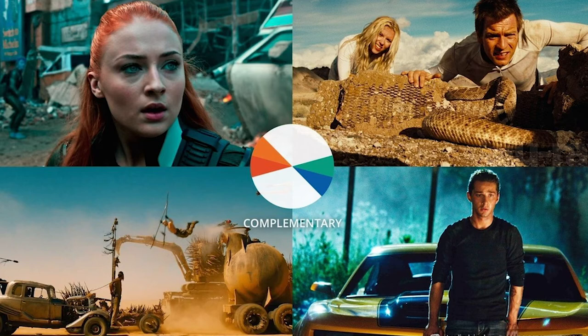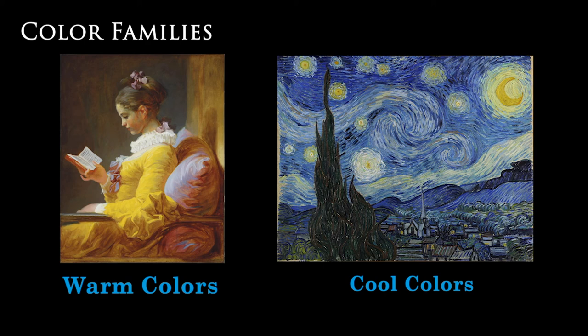Then there are the families of warm and cool colors. Warm colors are reds, oranges, and yellows, while cool colors are blues, greens, and purples. These color families represent certain general themes — warm colors being associated with warmth, vitality, lust, and passion, while cool colors are often associated with calmness, sadness, or even death.